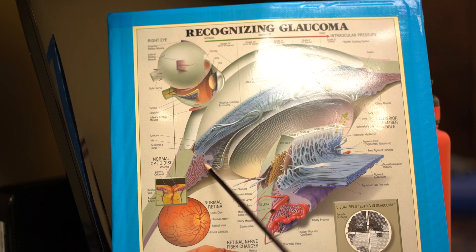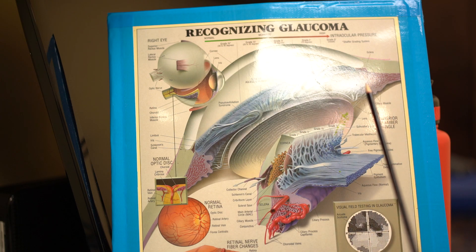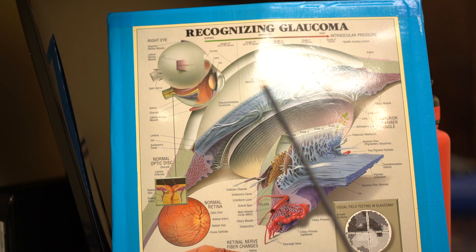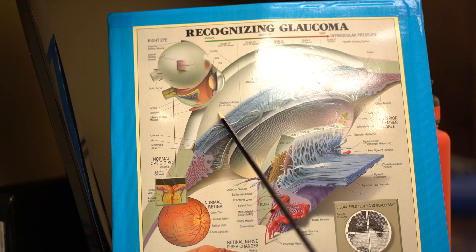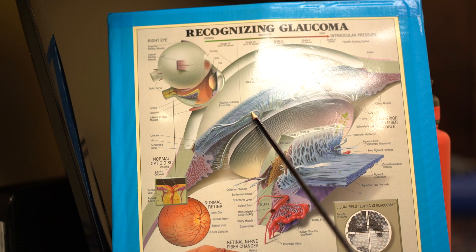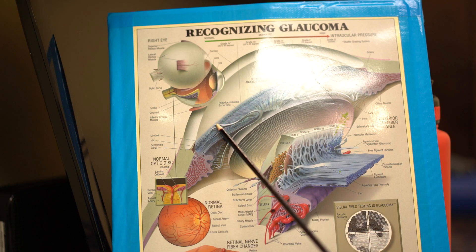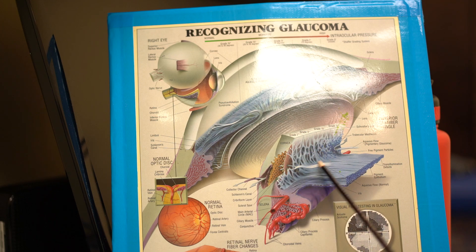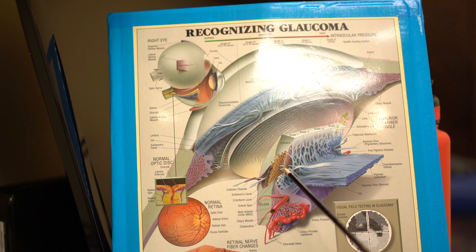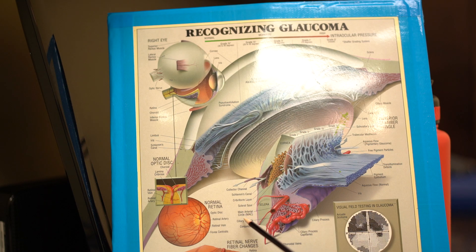This area here is called the ciliary body. The main thing you need to know is that we have fluid constantly circulating in and out of this chamber. It's produced here in the ciliary body. It flows out through the pupil into what we call the anterior chamber, and then it's supposed to drain out through a structure called the trabecular meshwork. The trabecular meshwork acts like a filtration device, filtering out all of that aqueous humor, which then flows out through the systemic venous system — through your veins — so it can get cleaned up.